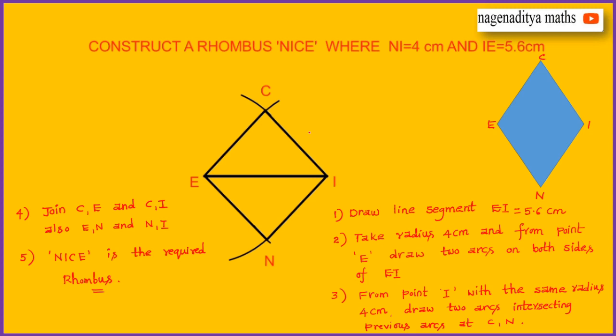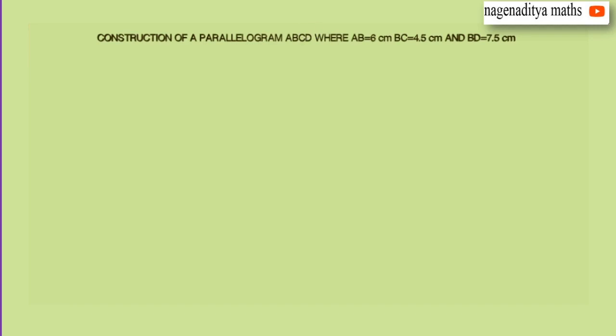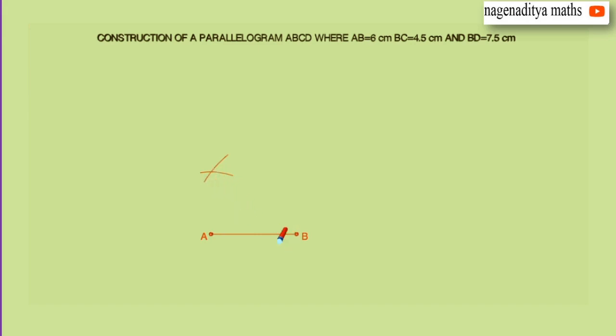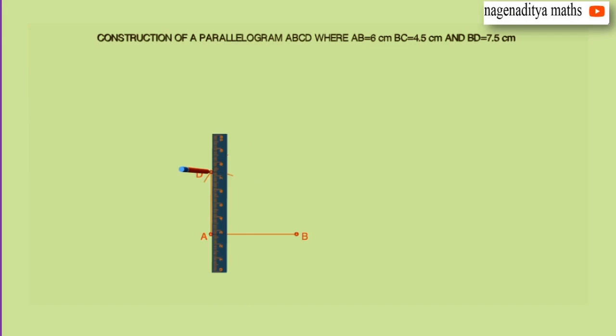Thank you very much. Construction of a parallelogram ABCD where AB is equal to 6 centimeters, BC is equal to 4.5 centimeters and BD is equal to 7.5 centimeters. First, draw line segment AB equal to 6 centimeters. From point A draw an arc with AD equal to 4.5 centimeters, and from point B draw another arc intersecting at D with radius BD equal to 7.5 centimeters. The point of intersection is D. Now join A and D, and B and D.